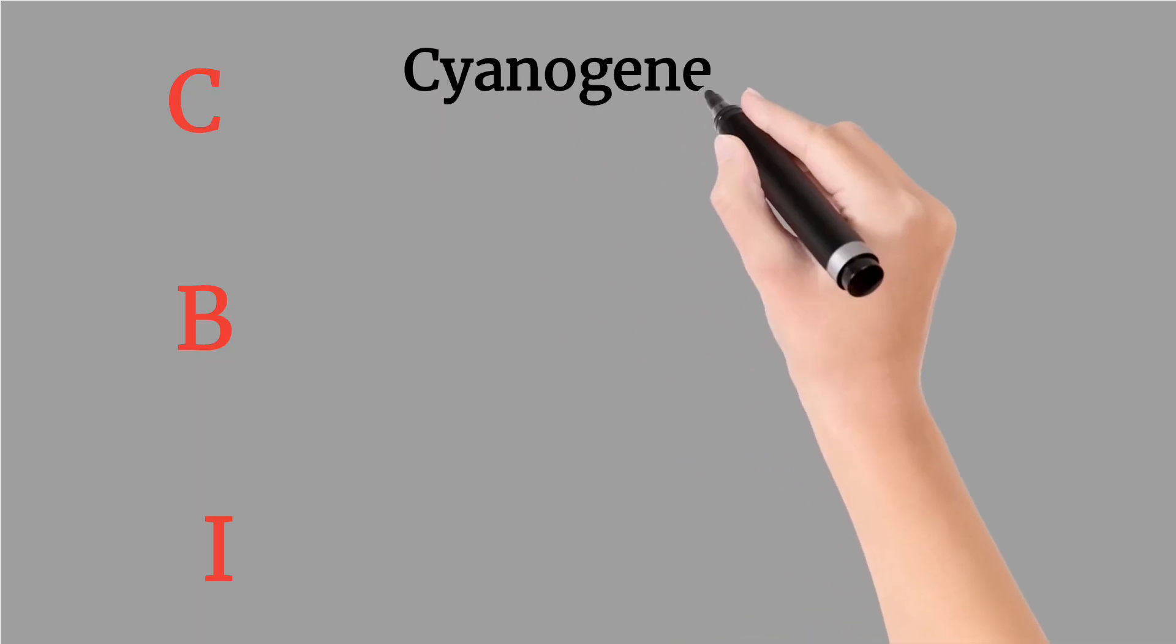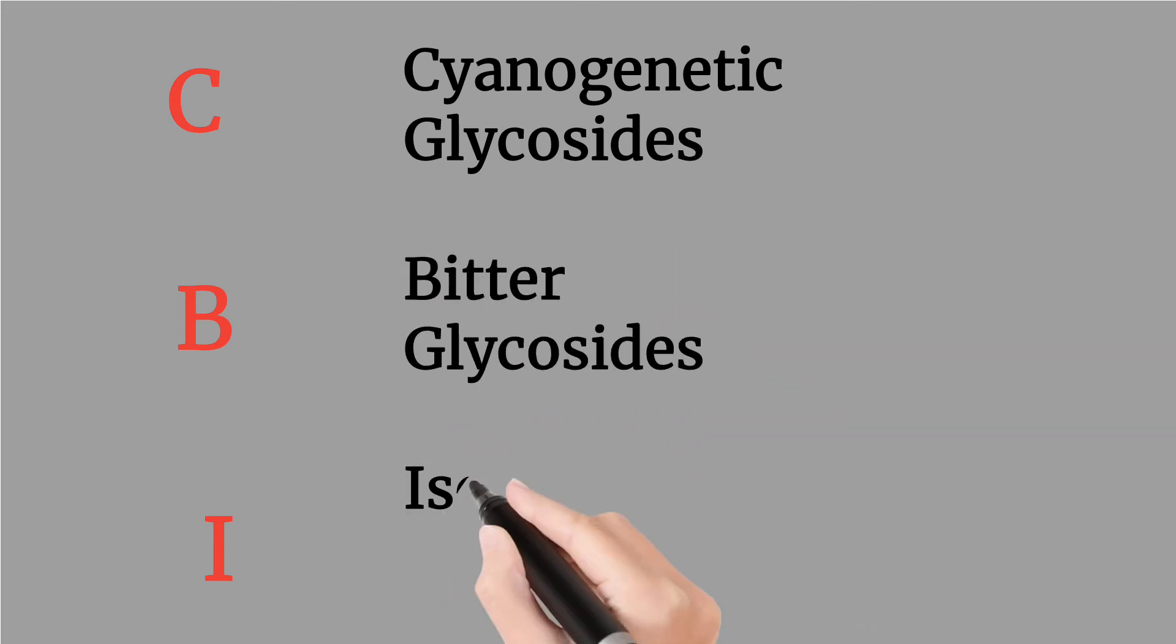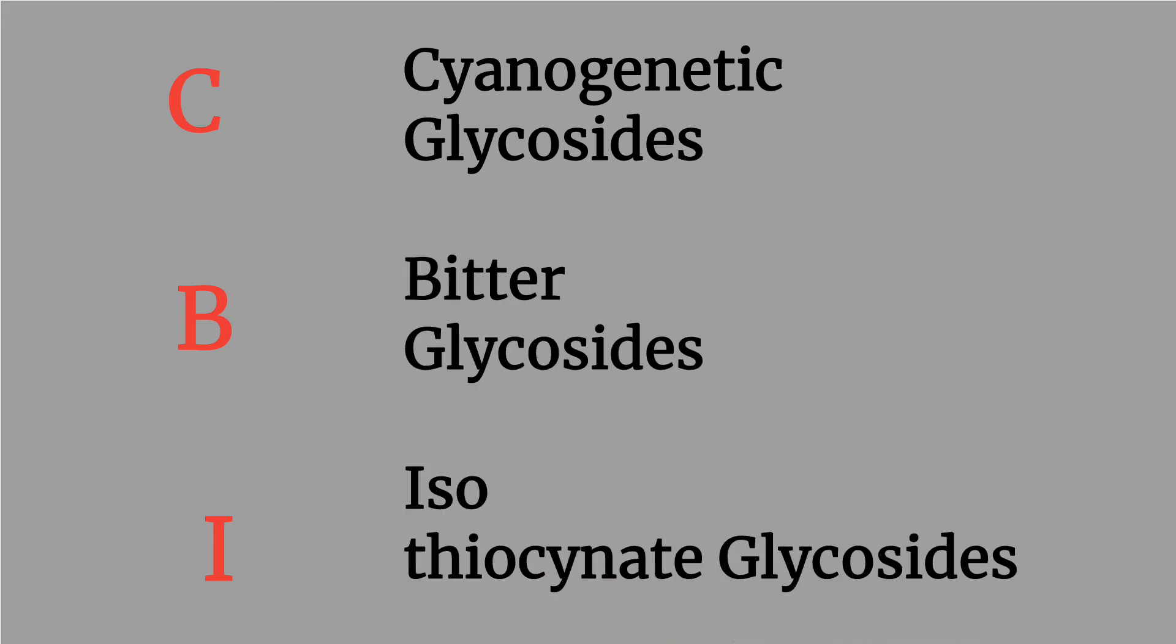C means cyanogenetic glycosides, B means bitter glycosides, and I means isothiocyanic glycosides.